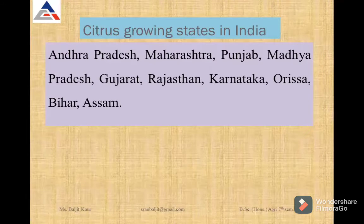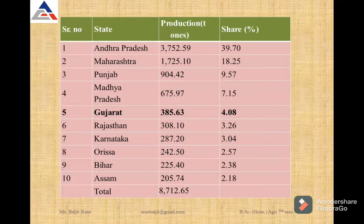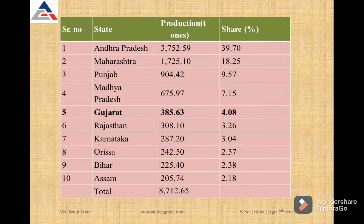This citrus fruit is rich in vitamin C. The major growing states in India are Andhra Pradesh, Maharashtra, Punjab, Madhya Pradesh, Gujarat, Karnataka, Odisha, and Bihar. The highest producer of citrus is Andhra Pradesh, followed by Maharashtra and Punjab. The maximum share of citrus production is coming from Andhra Pradesh.